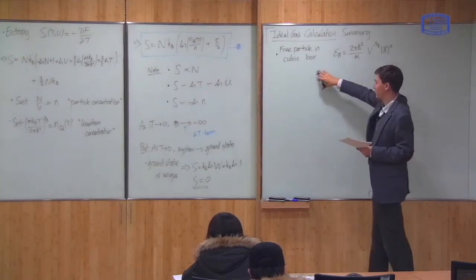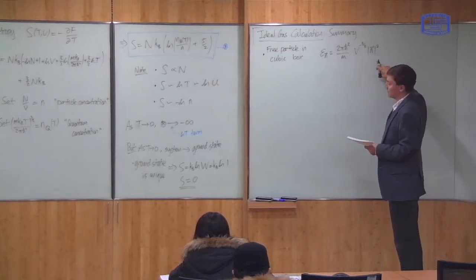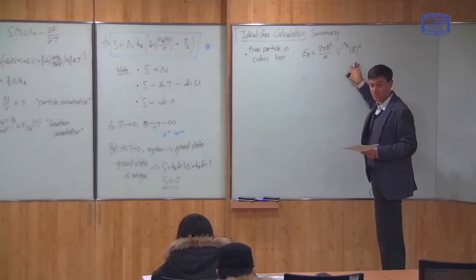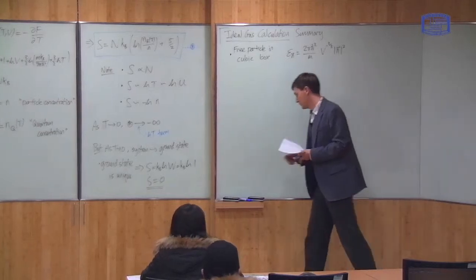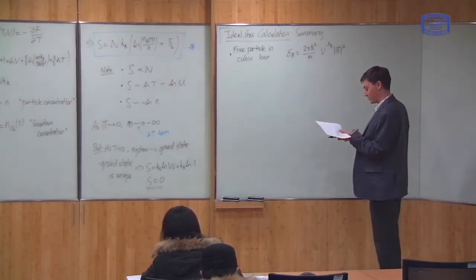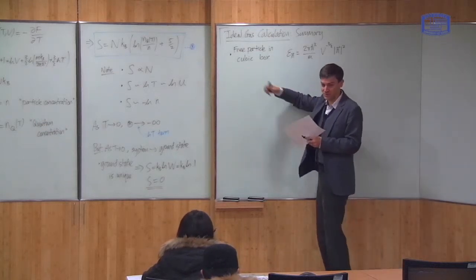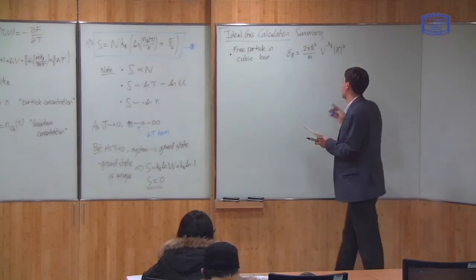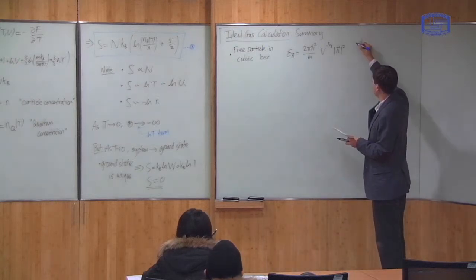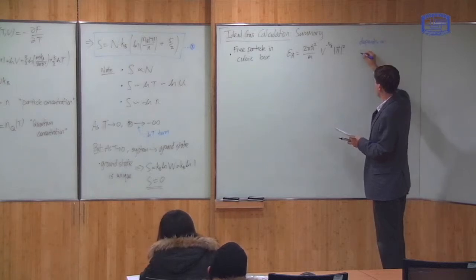We modeled a gas as lots of free particles in a box, and we calculated from quantum mechanics that the energy levels were this. And note that this result depends quite strongly on the shape of the box. In fact, this result is only true if the box is a cube. If I take a different shaped box, I will get different results. This result depends on the shape of the box.